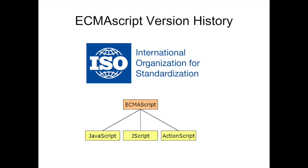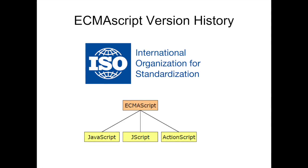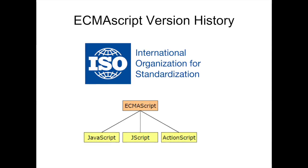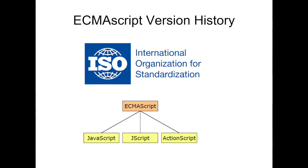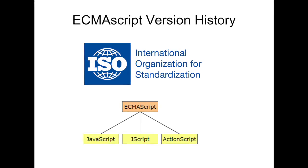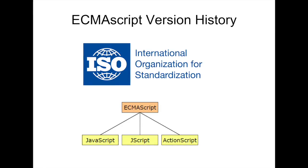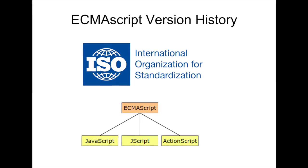In 1997, the first edition of ECMAScript was published by Guy L. Steele Jr. The next edition came in 1998, where editorial changes were made to keep the specification aligned with ISO international standards. In December of 1999, regular expressions were added along with better string handling, new control statements, and try-catch exception handling, along with tighter definitions of errors and numeric outputs, formatting, and other enhancements.